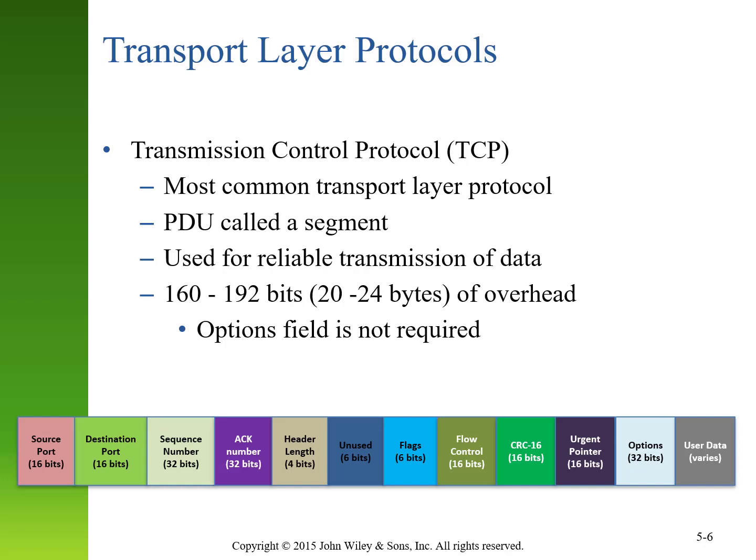The Transmission Control Protocol, the most common transport layer protocol, has a data unit called a segment. It is used for very reliable transmission of data, and it uses between 20 and 24 bytes of overhead, which include source and destination ports, the sequence number, an acknowledgement number, some header information, flags, flow control, error detection using CRC-16, and a variable user length field.